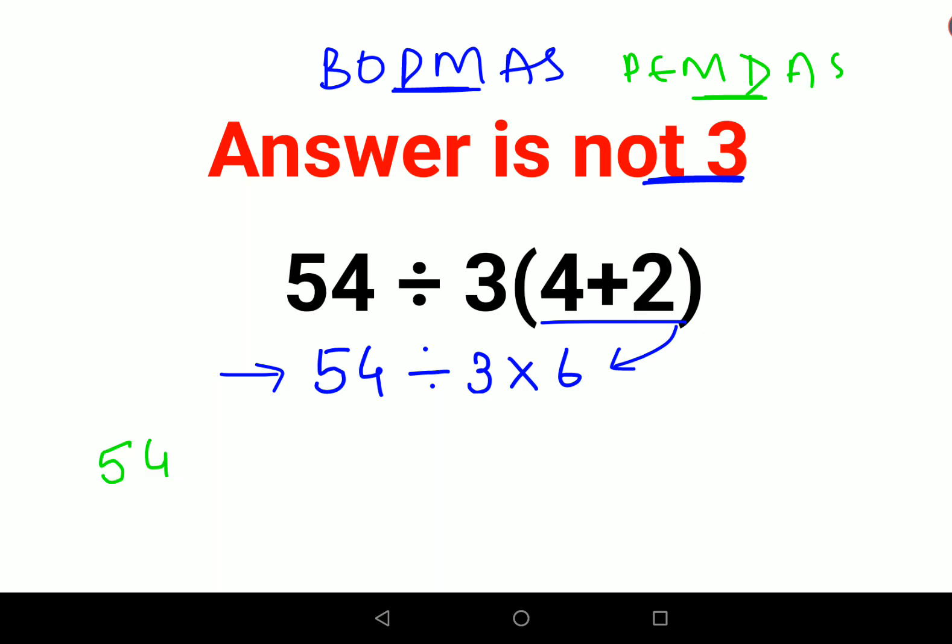KCF means keeping the first number as it is, C means changing the division sign to multiplication, and F stands for flipping or reciprocal of the second number. So reciprocal of 3 is 1 upon 3, into 6 will continue. So this is cancelling.